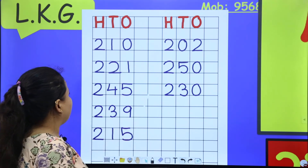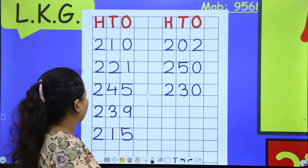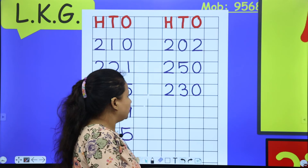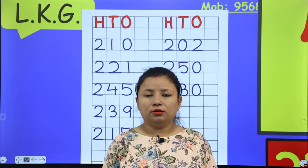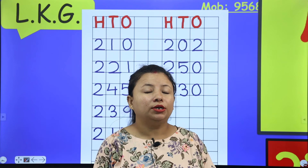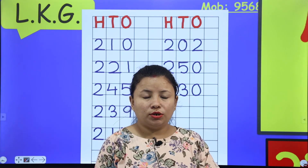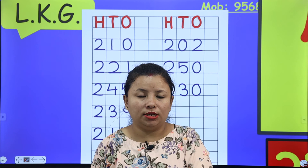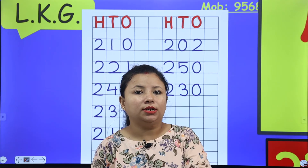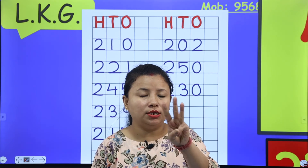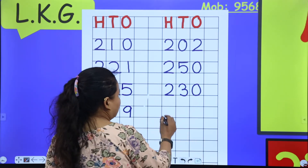The next number is two hundred thirty-three. Two hundred means two, thirty means three in the tens, and again three in the ones — two hundred thirty-three, 233.